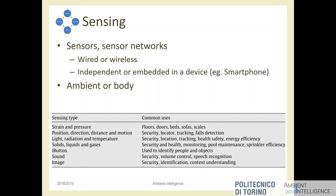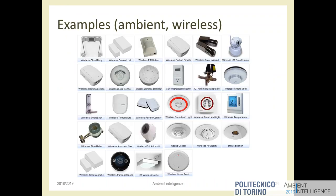Measurements can be taken transparently to the user — the user doesn't need to take any action. These are examples of sensors designed for integration into a smart system. A quick search shows really everything is available. The last of our problems is finding the sensor we need — understanding what we need to sense and measure is the bigger design problem. Wearable sensors, environmental sensors, and so on.